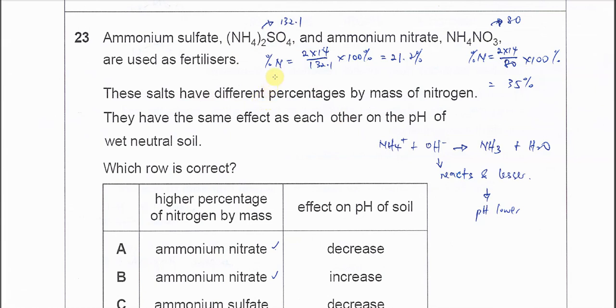So we calculate the percentage of nitrogen for ammonium sulfate. You need to use 2 times 14 (because 2 nitrogen inside) times the molar mass over the molar mass of the salt, so you get 21.2%. The percentage of nitrogen in ammonium nitrate, you do the similar calculation.